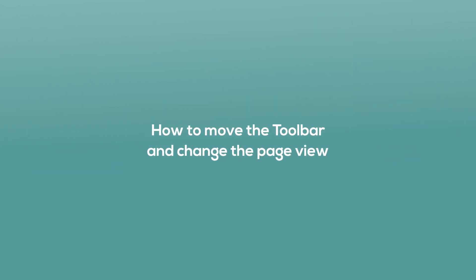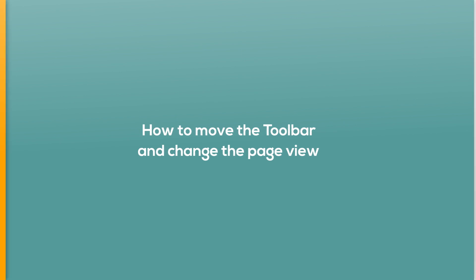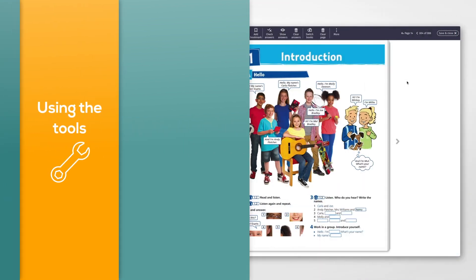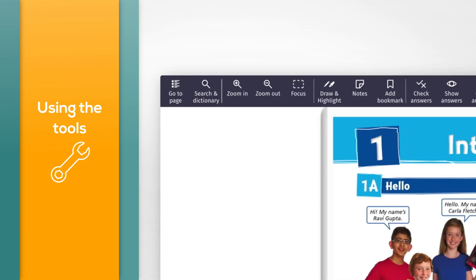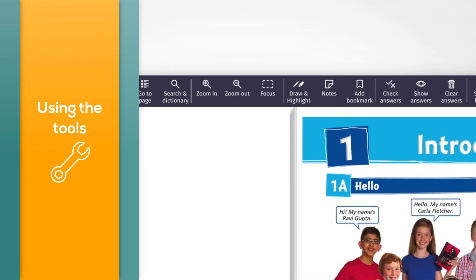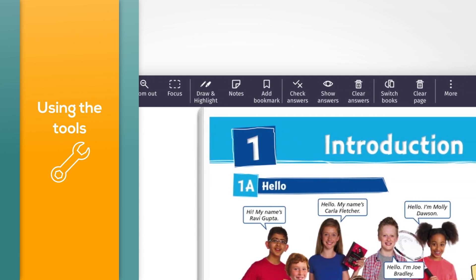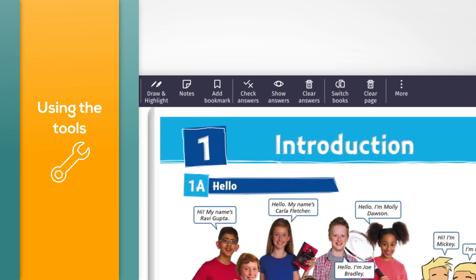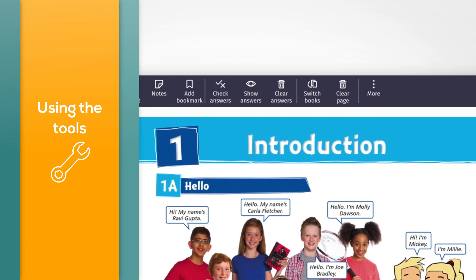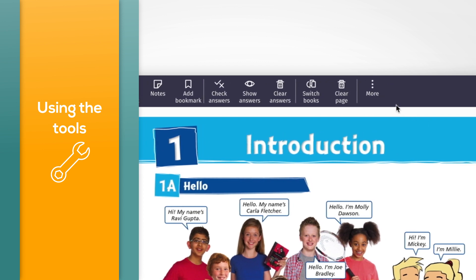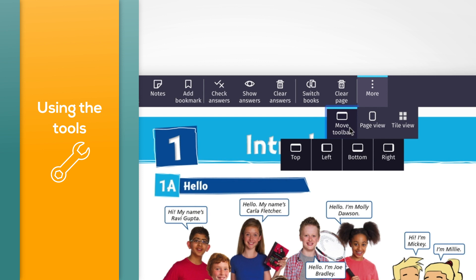How to move the toolbar and change the page view. You will see the toolbar when you open a book. The toolbar is usually at the top of the screen, but you can move it to a different place if you want to. Select 'More' on the right of the toolbar, then click the 'Move toolbar' button. You can choose whether you want the toolbar to be set to the top, bottom, or either side of the screen.